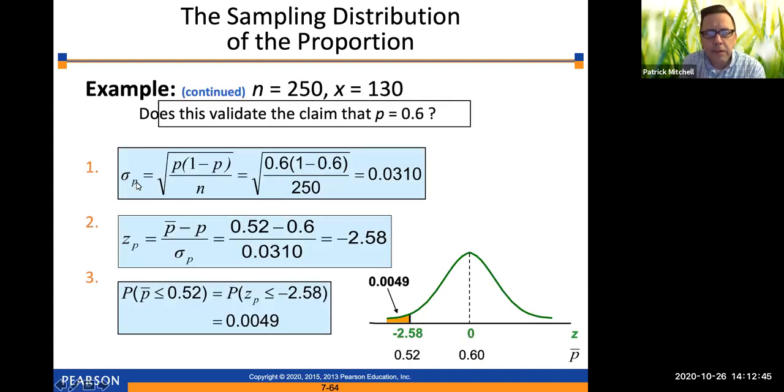All right, so step one, sigma sub p, which is the square root of p times 1 minus p divided by n. That comes out to the square root of 0.6 times 1 minus 0.6 divided by 250. And you should verify on your calculator that that comes out to 0.0310. Next, we'll calculate the z score. P bar minus p divided by sigma sub p is 0.52 minus 0.6, divide that by 0.0310. That comes out to negative 2.58.